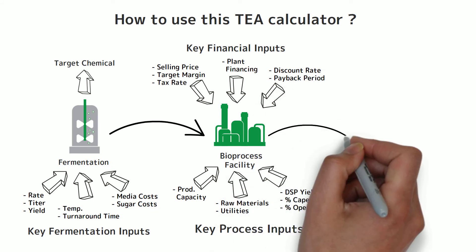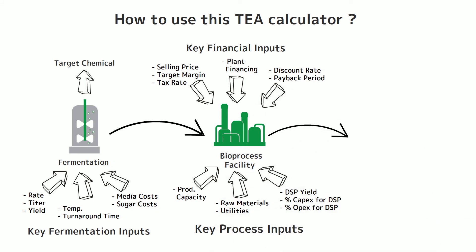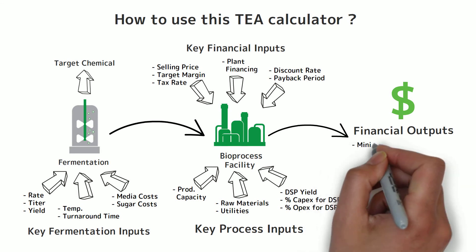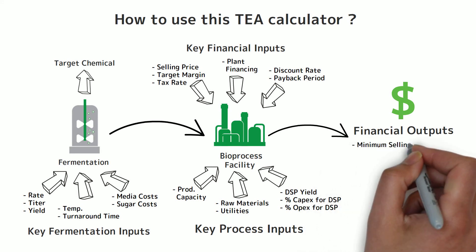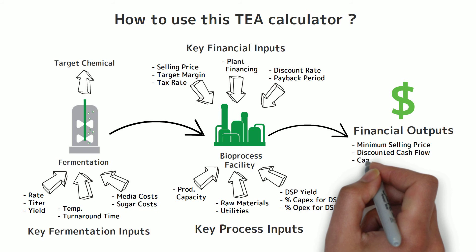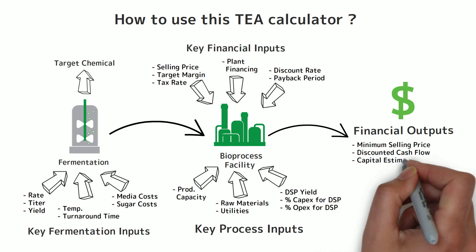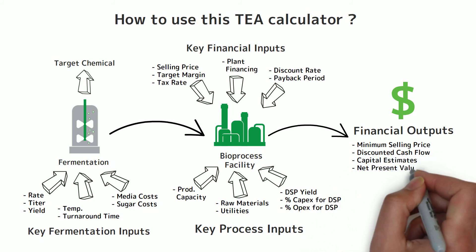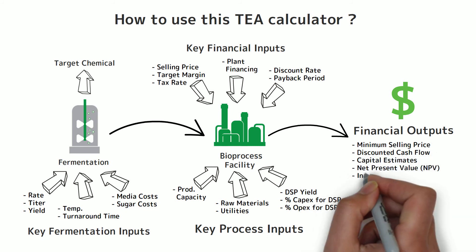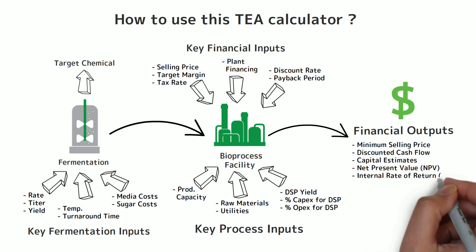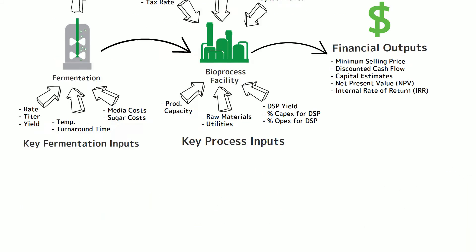With all of these inputs, the calculator estimates key financial outputs for the plant, including the minimum selling price needed to achieve the target margin, a detailed discounted cash flow analysis, detailed capital estimates, as well as the projected net present value and internal rate of return, or IRR, for the project.